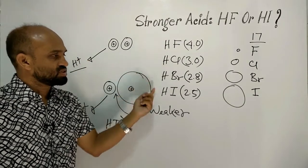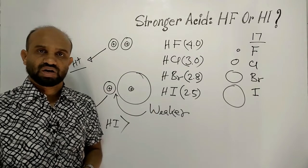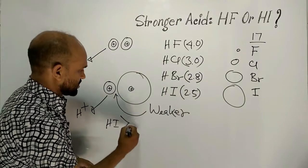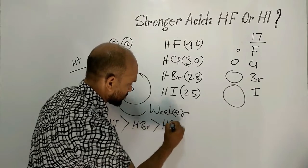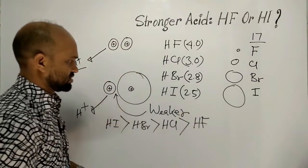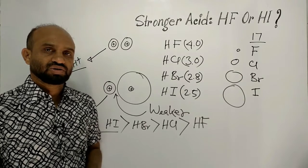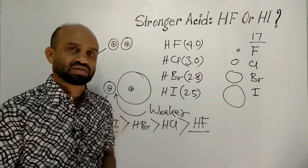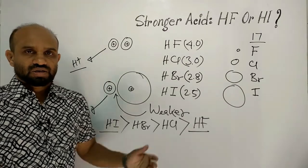From this discussion of the sizes of halogens, we can write the strength order: hydroiodic acid is the strongest acid, then hydrobromic acid, after that hydrochloric acid, and lastly hydrofluoric acid. That means hydroiodic acid is the strongest among the hydrohalic acids, and hydrofluoric acid is the weakest.